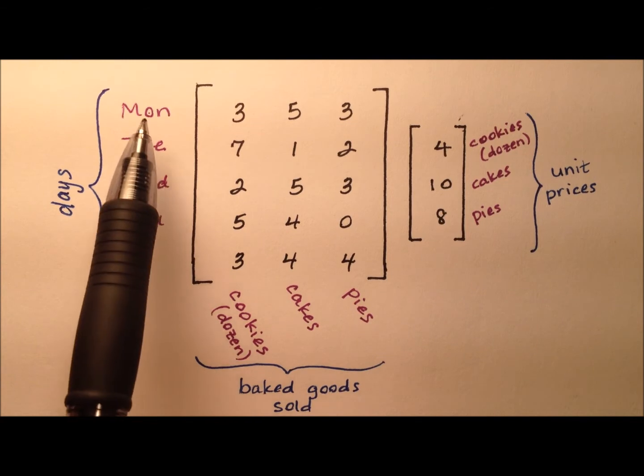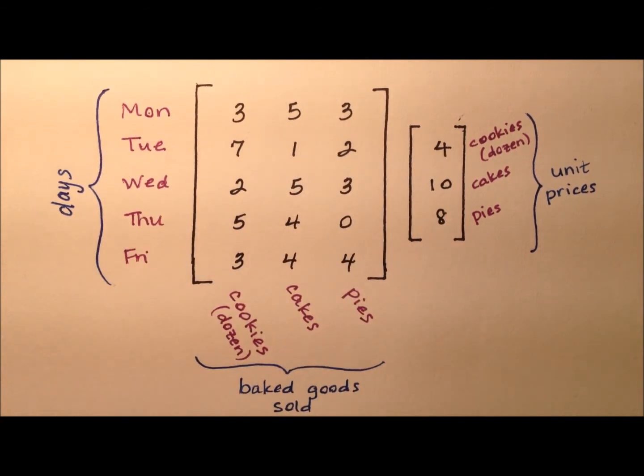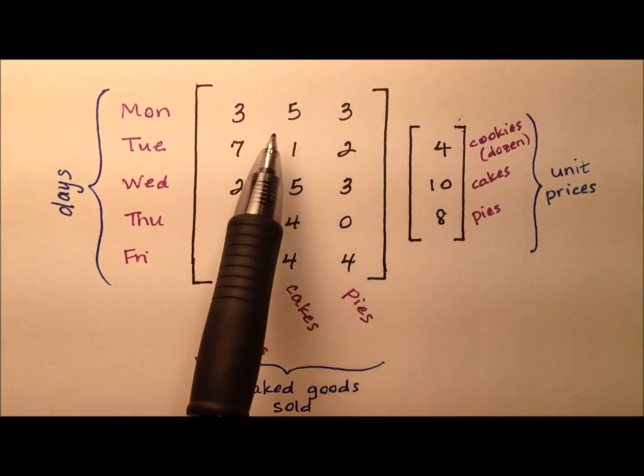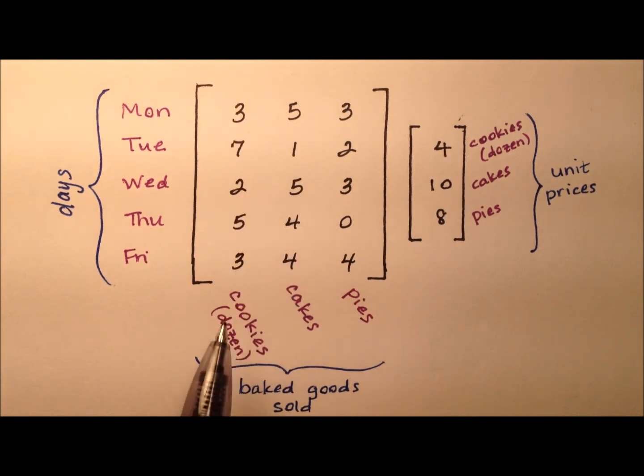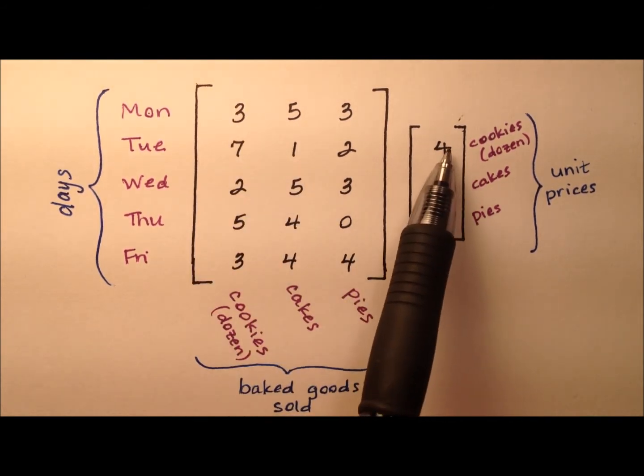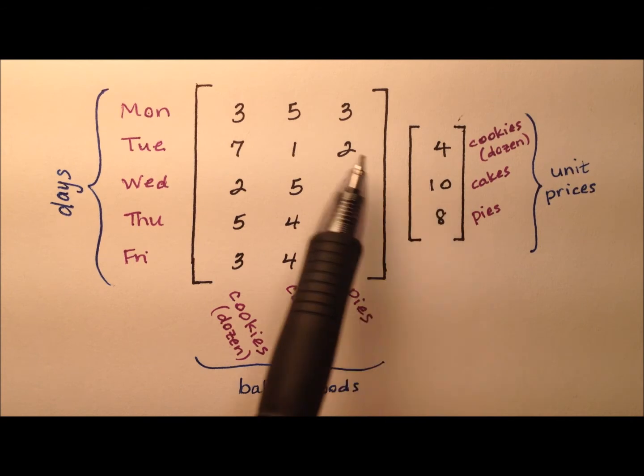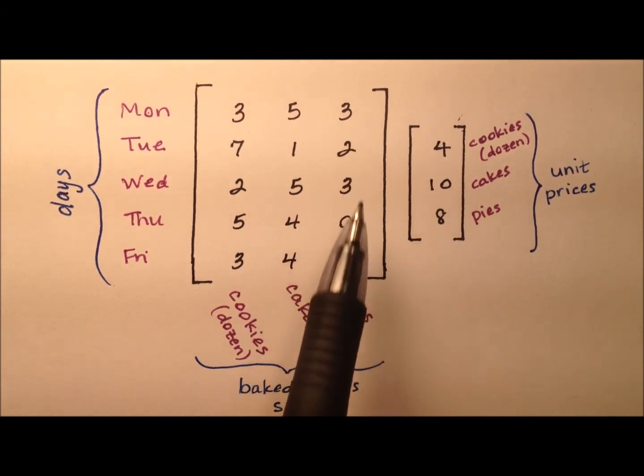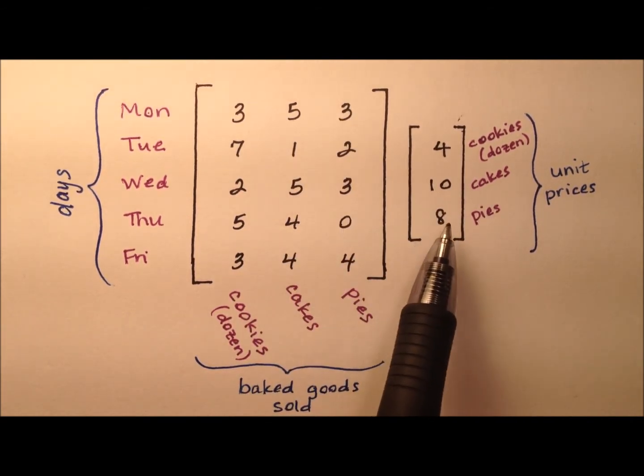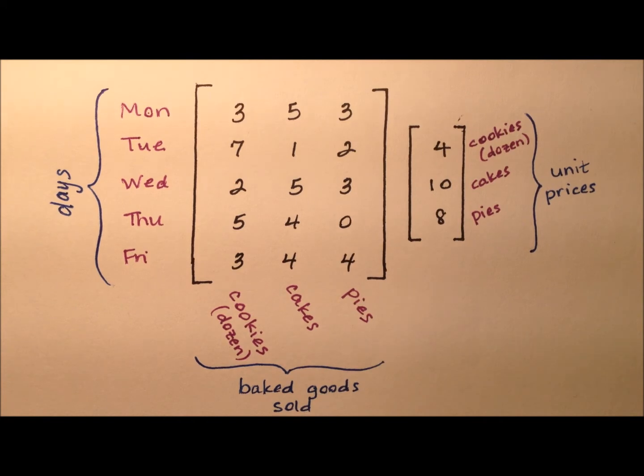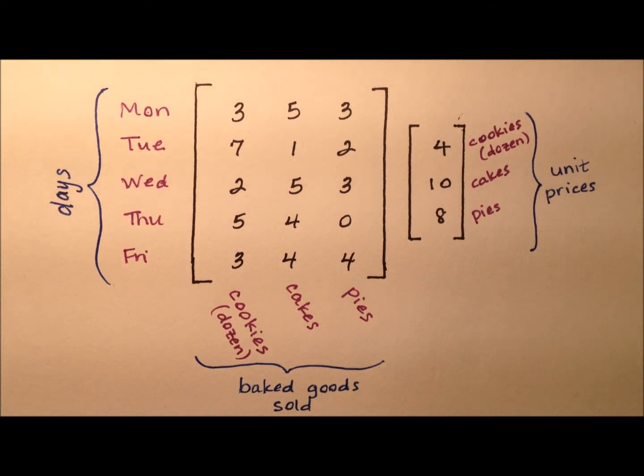If we were going to look at just Monday, for example, and we were trying to figure out how much she made, she had three dozen cookies, and we know cookies are $4 per dozen, so we would take three times four. She sold five cakes, cakes are $10 each, so five times 10. And she sold three pies, pies are $8 each, so three times eight, and then she'd just add all those up. But isn't that just matrix multiplication, where you have a series of multiplications, and then you add up all the products?